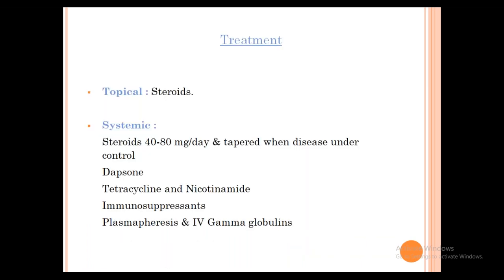Treatment of Bullous Pemphigoid: systemic steroids at 40–80 mg (not as high as Pemphigus Vulgaris — 40–50 mg is usually sufficient). Dapsone gives good results. Combination of tetracycline and nicotinamide is effective, and sometimes immunosuppressants like Azathioprine or Cyclophosphamide are required.